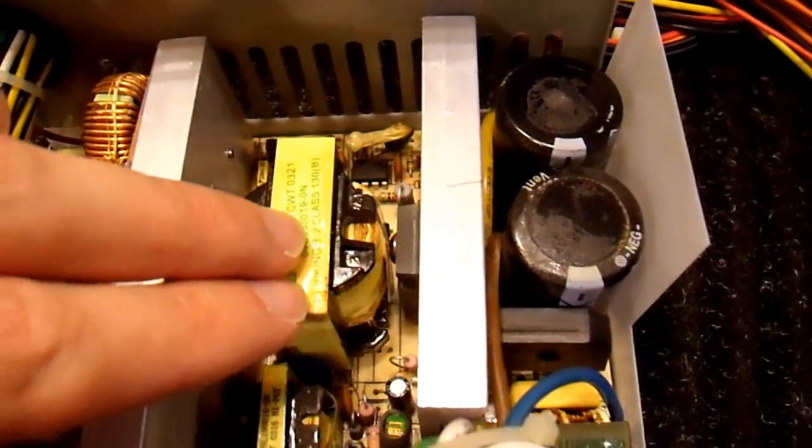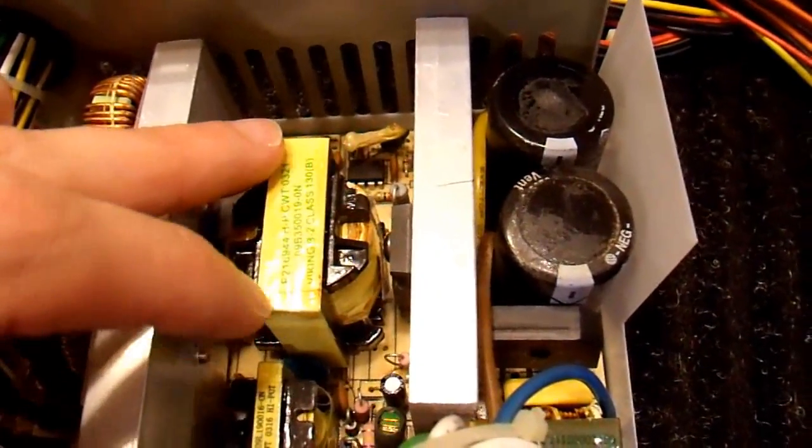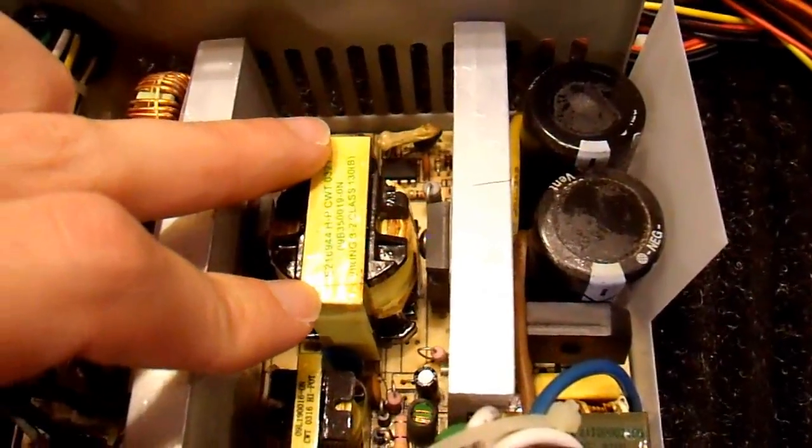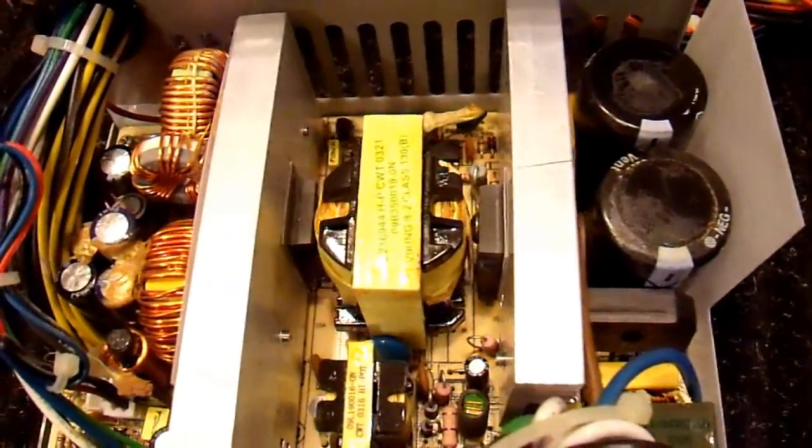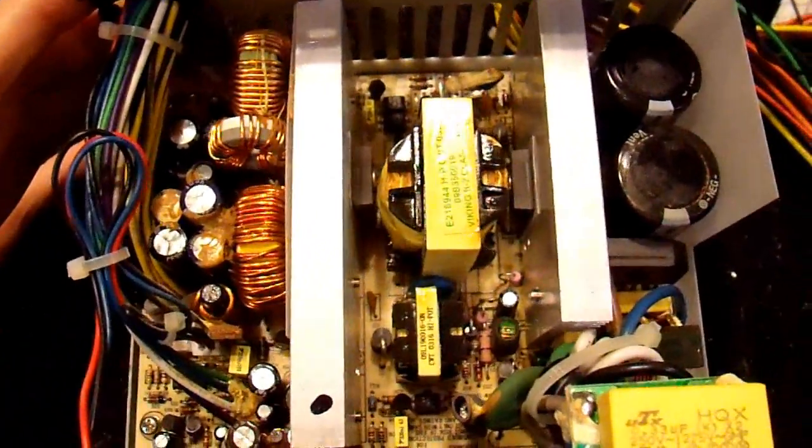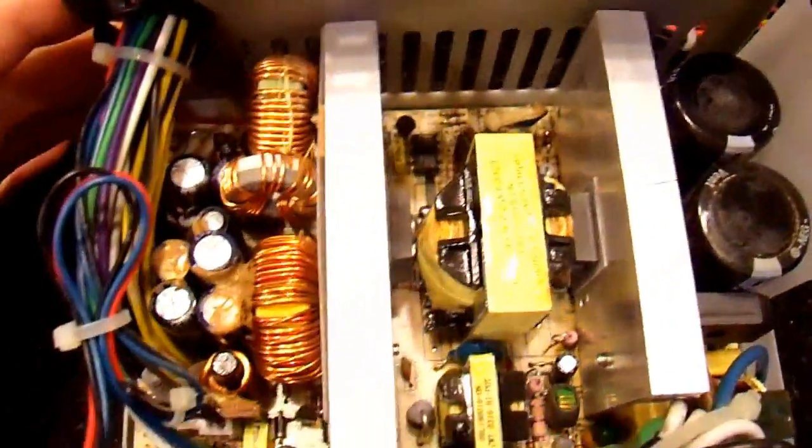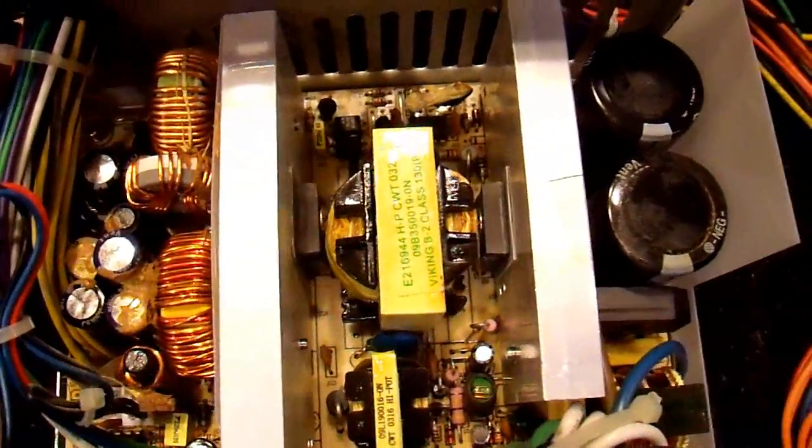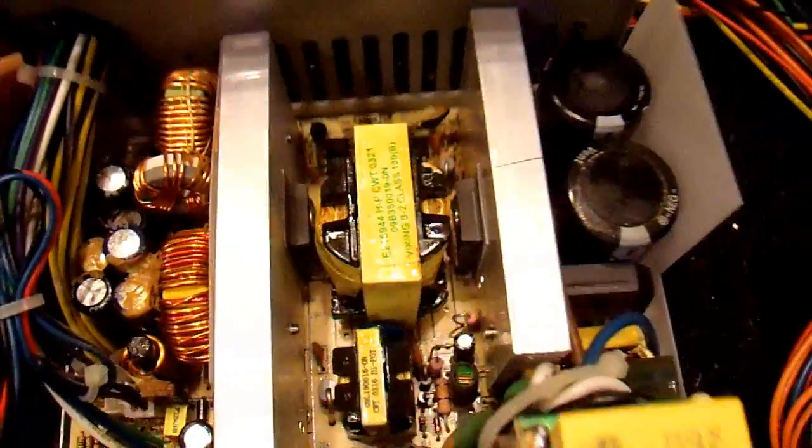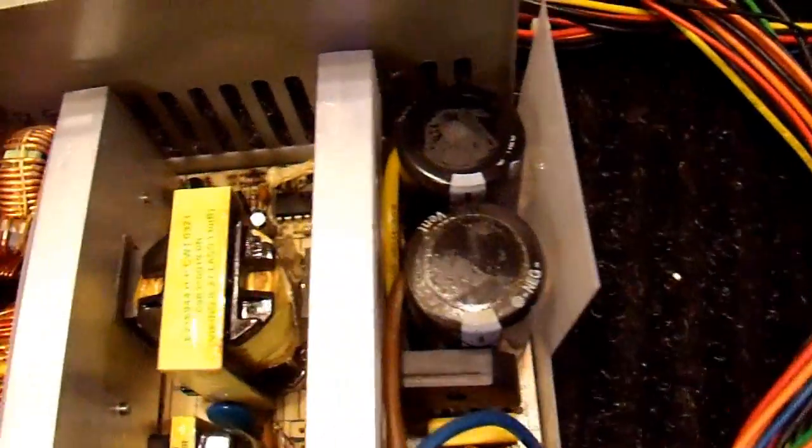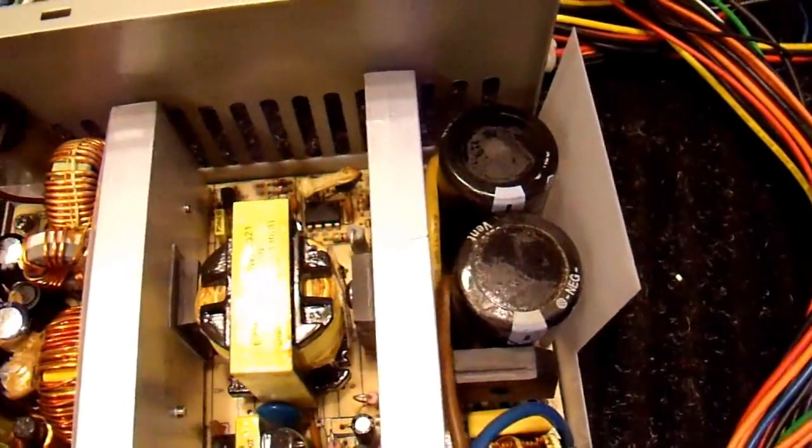This is a transformer. It's either a flyback transformer or a forward converter transformer that has tertiary windings. I would imagine that, because this is a 230 watt supply inside a relatively small case, it's probably going to be a forward converter, not a flyback. They're a little bit more efficient. But I don't really know and I'm not going to dig into it to find out. It doesn't really matter.